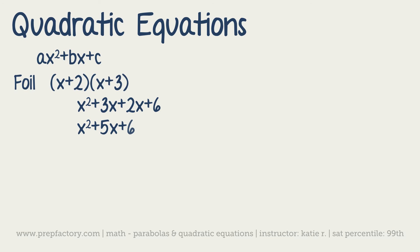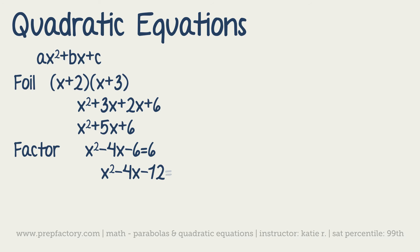Now let's factor — doing the exact opposite. Starting with x² - 4x - 6 = 6: whenever you factor, you need to get the equation equal to 0, so subtract 6 from both sides to get x² - 4x - 12 = 0. Set up (x ± something)(x ± something) = 0. The two numbers must add up to -4 and multiply to -12.